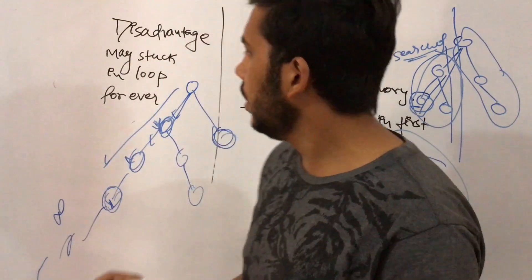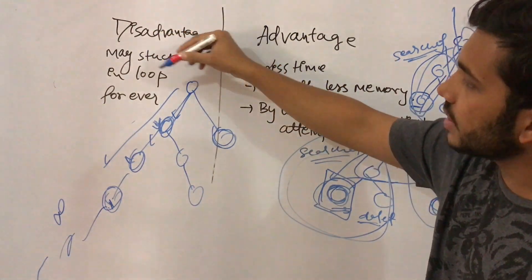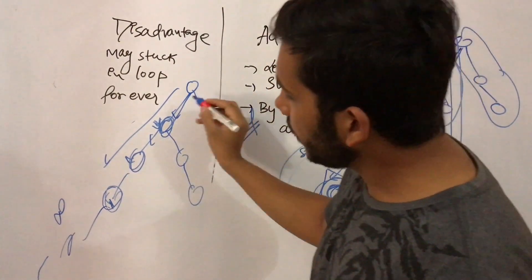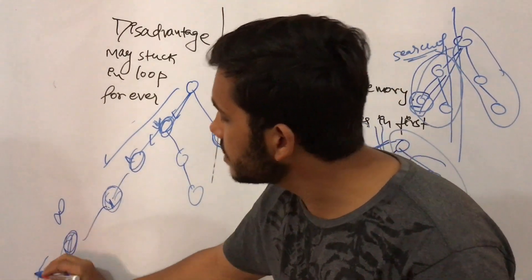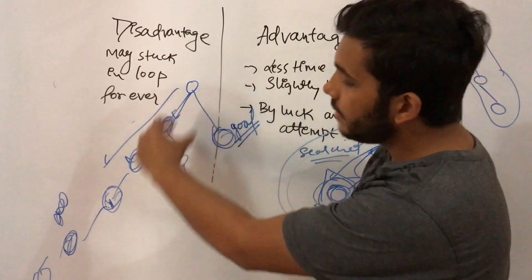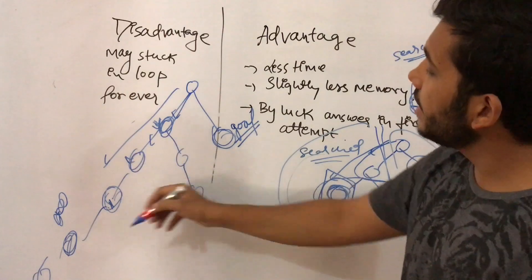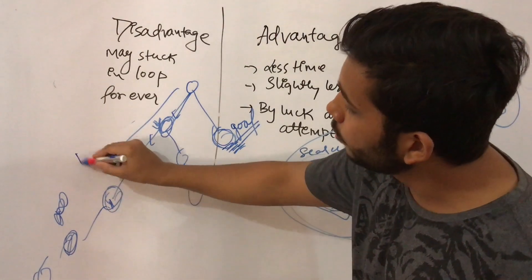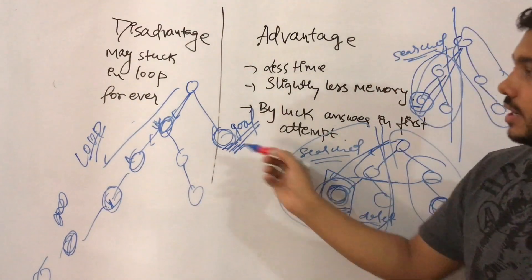The disadvantage of depth first search is that sometimes it may get stuck in a loop forever. Suppose your goal node is somewhere and you start searching from a node that leads to an infinite number of successor nodes. It may be the case that you go searching in that branch forever and never return to search the actual goal node, so you will not be able to find the answer.